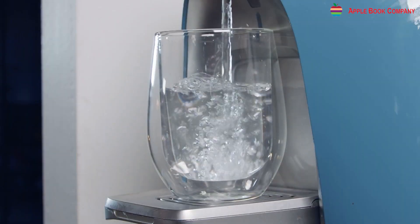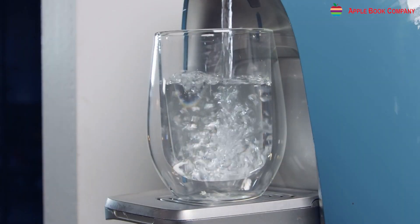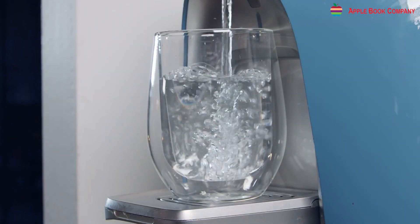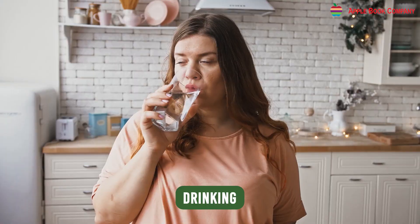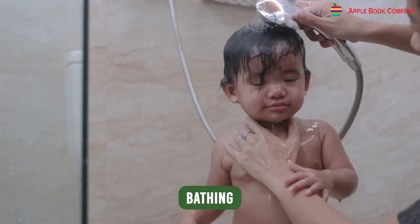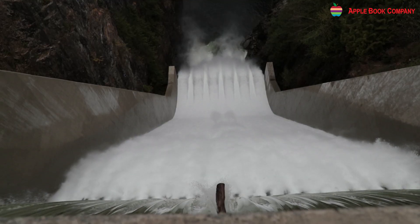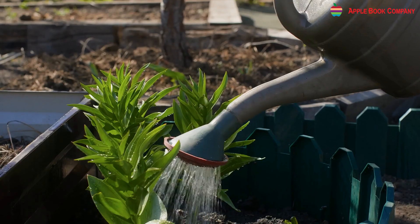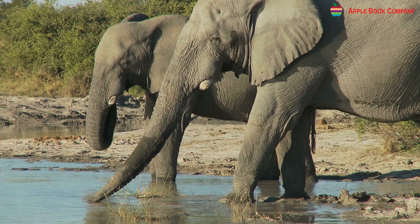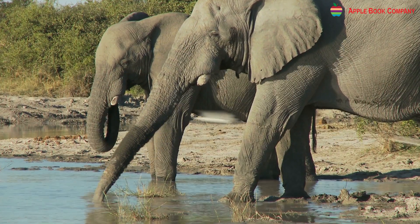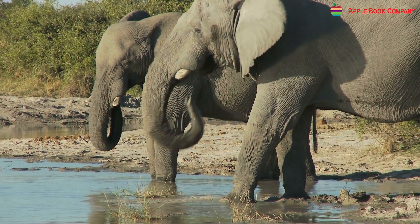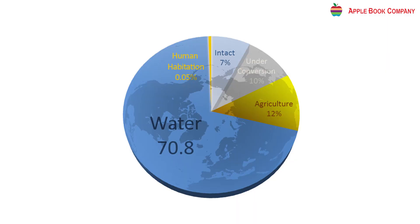Water is essential for our life. We use it for cooking, drinking, bathing, agriculture, and generating electricity. Both plants and animals need water to live and grow. About 70% of the earth's surface is covered by water.